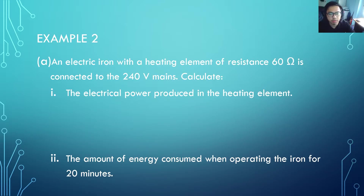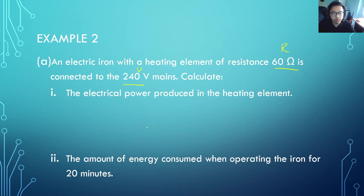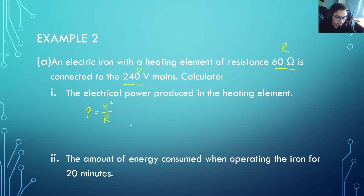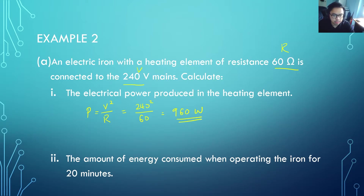Example 2a: An electric iron with a heating element of resistance 60 ohms is connected to the 240-volt mains. Calculate the electric power produced in the heating element. Since we are only given V and R, we use P equals V²/R. With V equal to 240 volts and R equal to 60 ohms, the power is 960 watts.